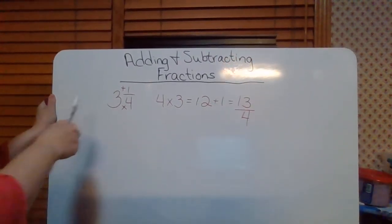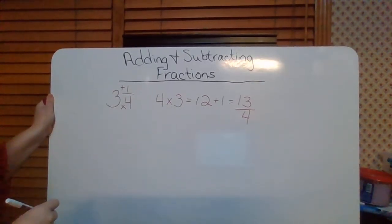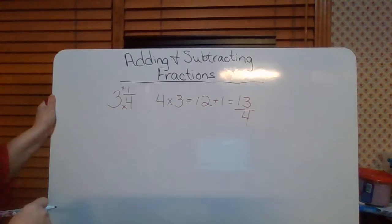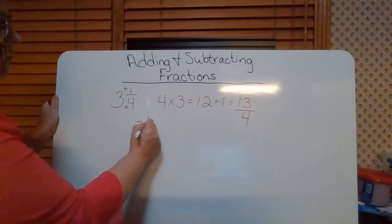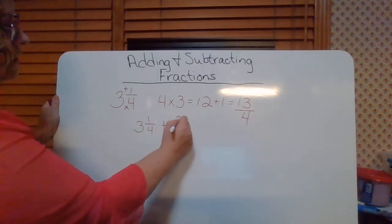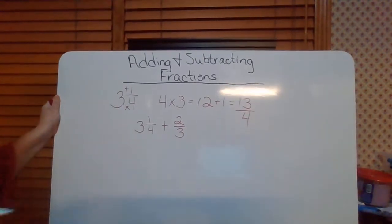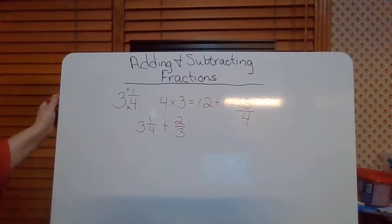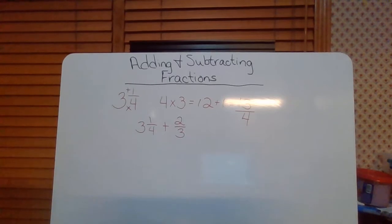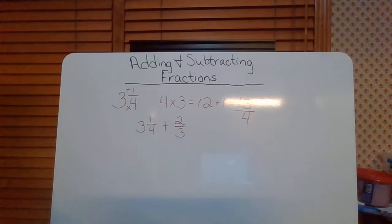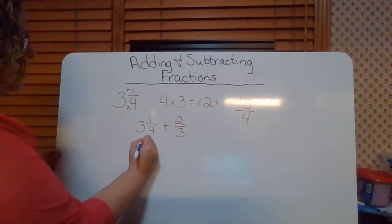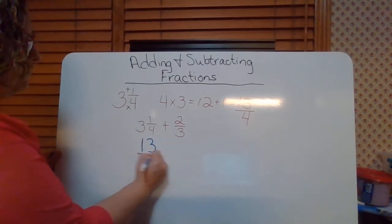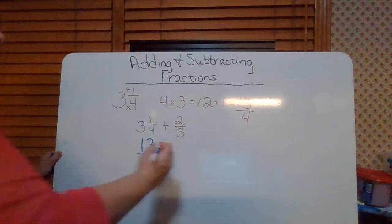So three and one-fourth is the same thing as 13 over four. Let's say that your problem is this: three and one-fourth plus two-thirds. We've already changed the mixed number to an improper fraction, so that's 13 over four. So this is 13 over four plus two-thirds.